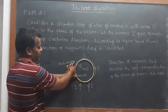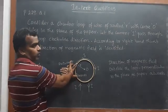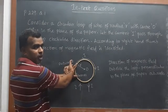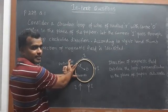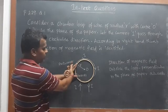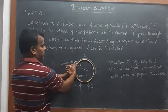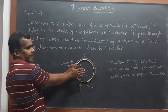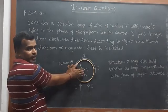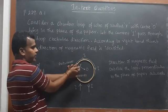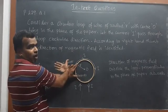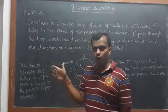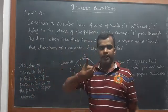So here the current is passing in upward direction, therefore the magnetic field becomes outward. And what about the inside? If I turn like that, what about the inside? Yes, it's inward direction. Inside it is inward, outside it is outwards. This direction is outwards, and this direction is inwards.